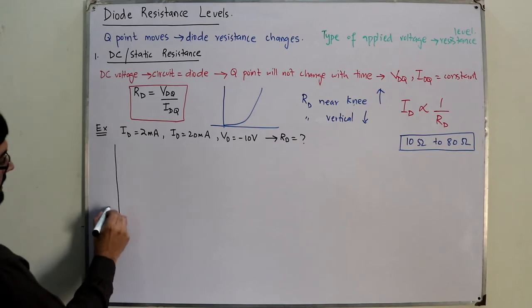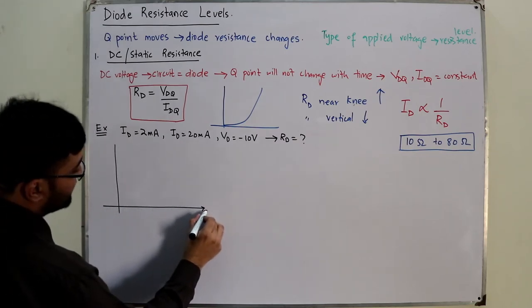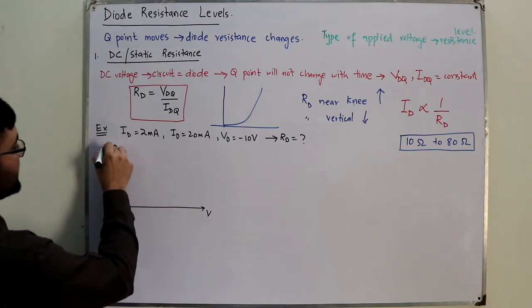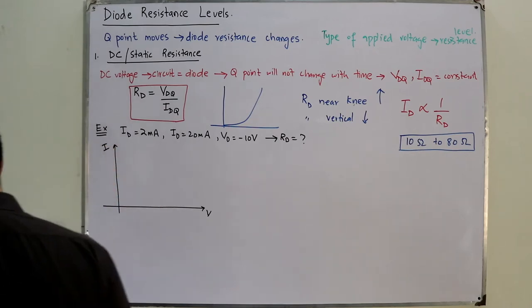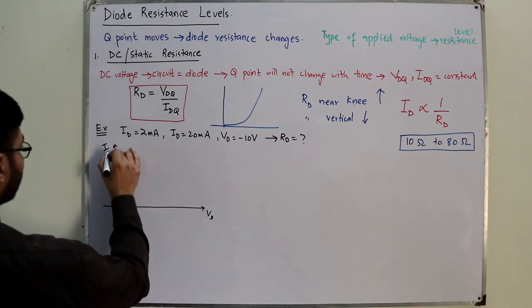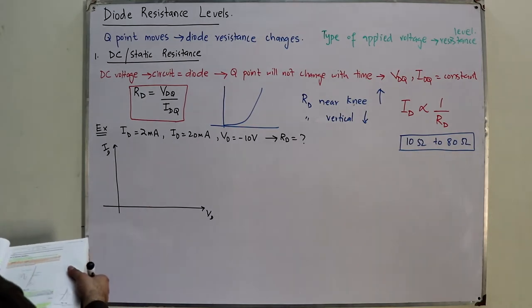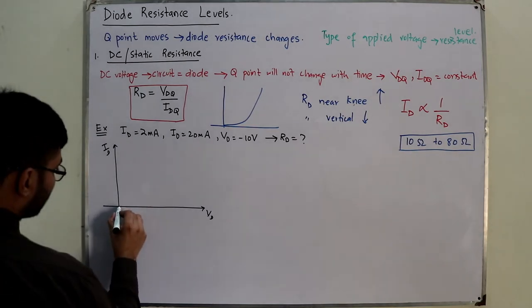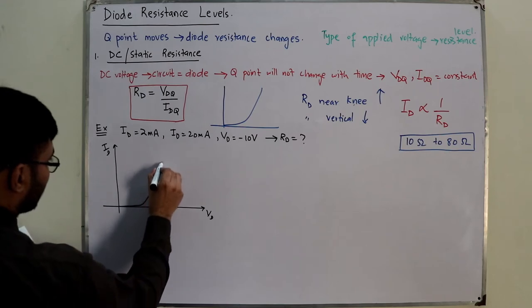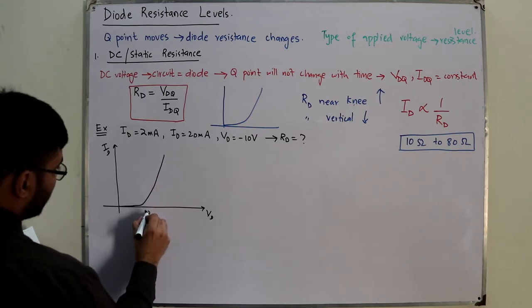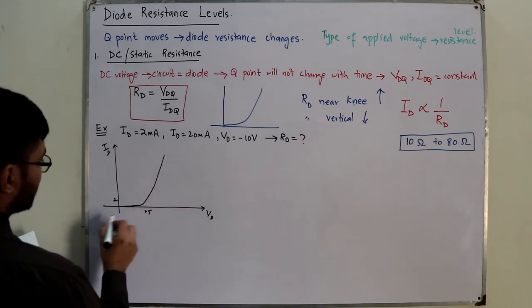Let me draw it. I may not draw it properly, you can check it out from the book. If this is your V axis, this is your I axis, of course through the diode. So what do you see from here? At 0.5 volts, it's 2 milliamps. So let's say over here we have 0.5, so over here it's 2.